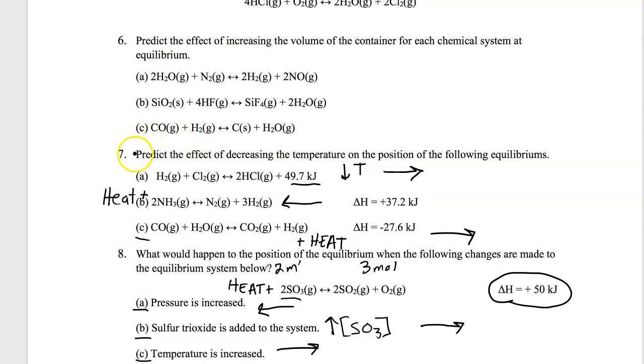For six, going in reverse order here, we're going to increase the volume of the container for each of these. We're going to lower the pressure. If we lower the pressure, it's always going to shift to the side where there are more moles of gas. So in this first one, four moles of gas on the right, only three on the left. So with more moles of gas on the right, we can raise the pressure back up a little bit by going from three moles of gas to four moles of gas or shifting to the right.